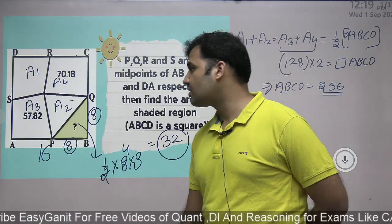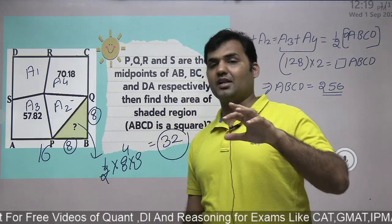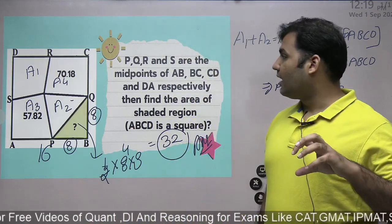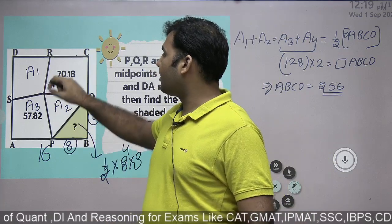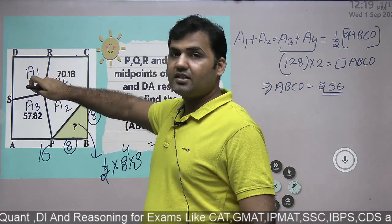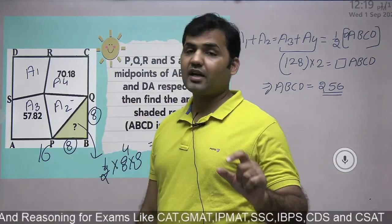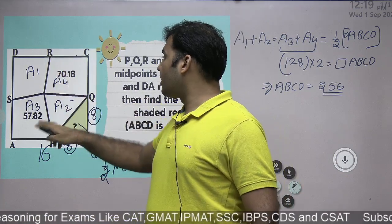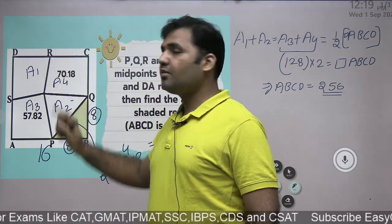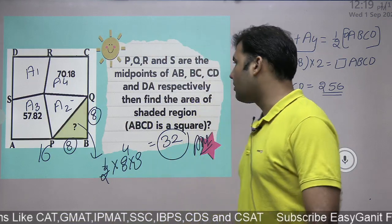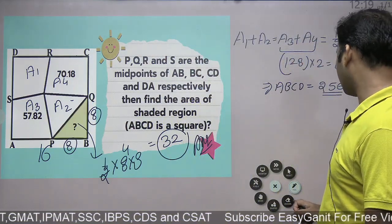So if you know this rule you can directly solve this question. Now the question is: why does this exist? Why does a point inside a square, when joined with all the midpoints of the sides, divide it into four quadrilaterals where a1 plus a2 equals a3 plus a4? Why this rule? Let's talk about the derivation.